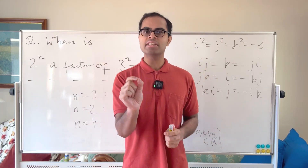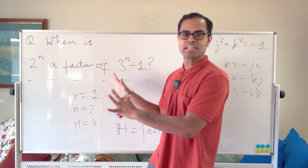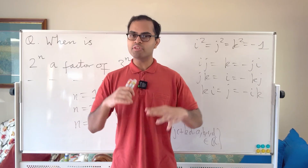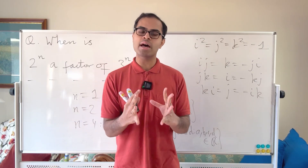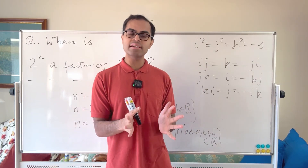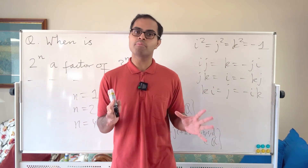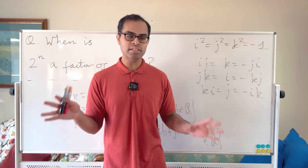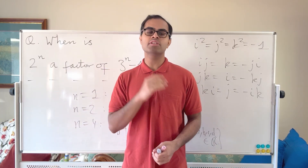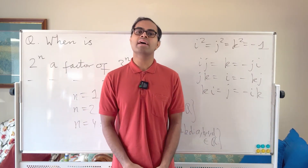If you loved this video, here are two recommendations: first, a proof that the LCM of 1, 2, 3, up to n is always greater than 2^n — a deep result relating to prime distribution using basic integration, which I find the most beautiful proof in math. Second, a masterclass on the Euler totient function covering all fundamentals from scratch.